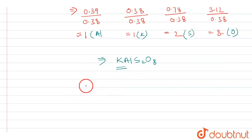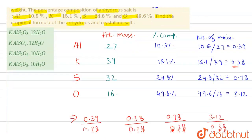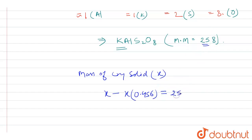To find the crystalline salt formula, we need to determine the number of moles of water molecules attached. The molecular mass of KAlS₂O₈ is 258. Let the mass of the crystalline solid be x. Since it loses 45.6% of its weight on becoming anhydrous, x − 0.456x = 258. Solving this equation gives x = 474 grams.